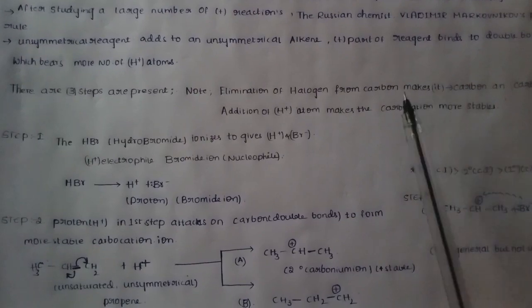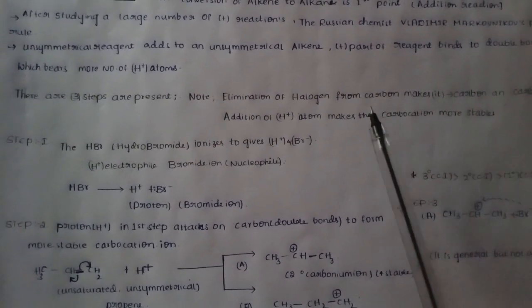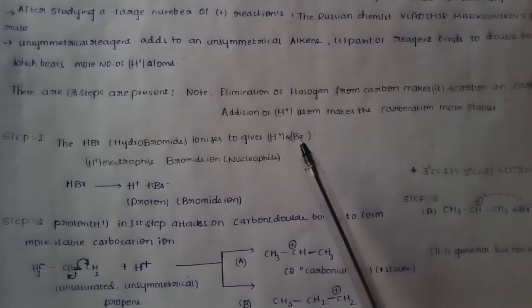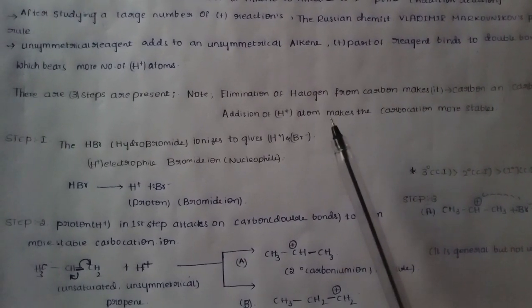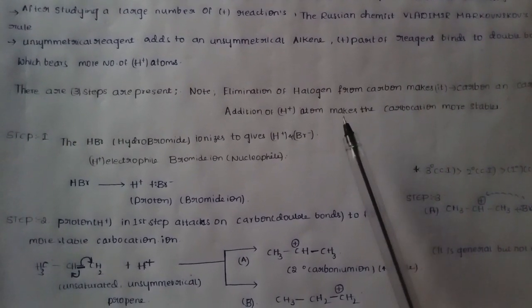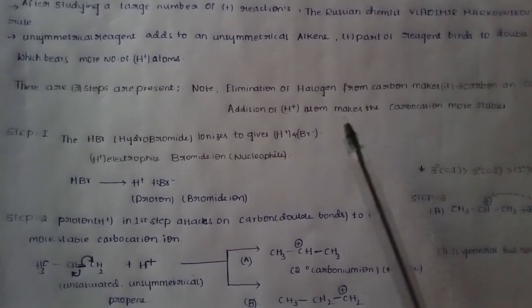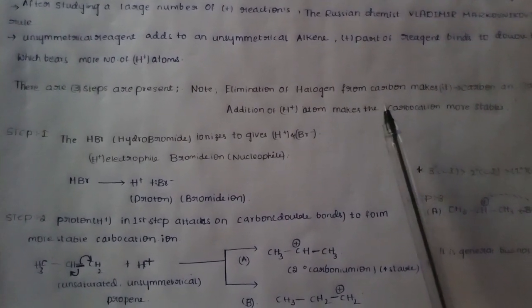The elimination reaction involves dehydrohalogenation — meaning hydrogen and halogen are removed. This is the dehydrogenation process, and it uses an alcoholic reagent.